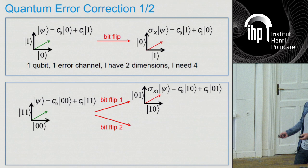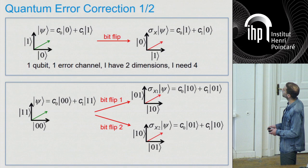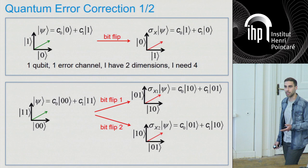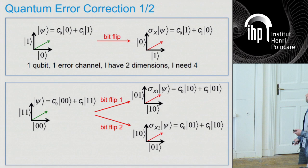You need to assume that everything you add also has errors. So in this case, the other state I can jump to is unfortunately not orthogonal to the previous one, so I can't distinguish the three cases of no error, first bit flips, or second bit flips. I would have liked to have six dimensions, and I only have four. So I'm still not done.